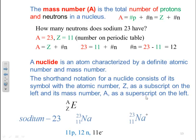For a charged sodium atom, sodium plus (²³₁₁Na⁺): the positive charge indicates that there are more protons than electrons by one. So it has 11 protons, 12 neutrons, and only 10 electrons.